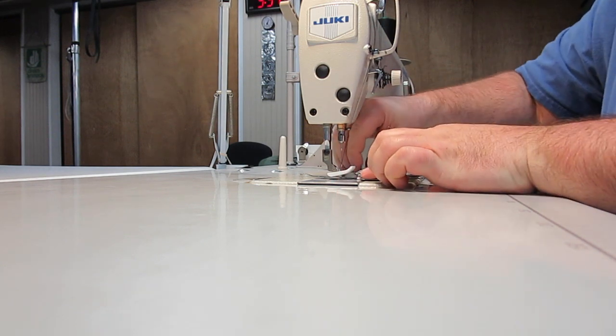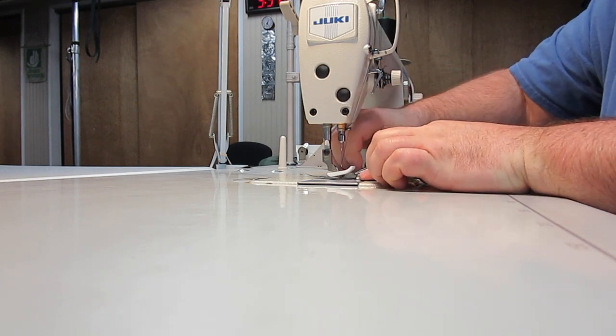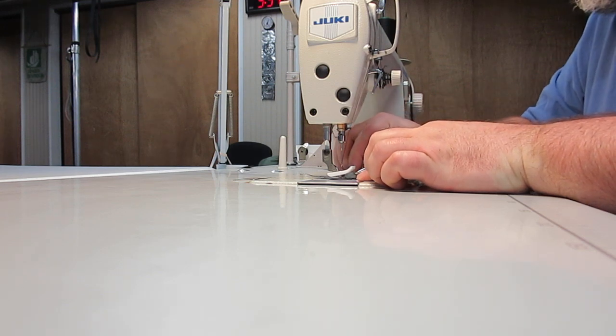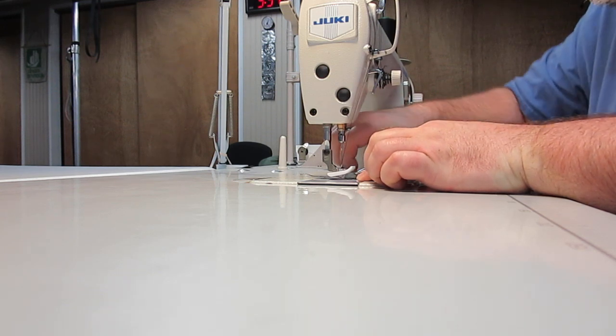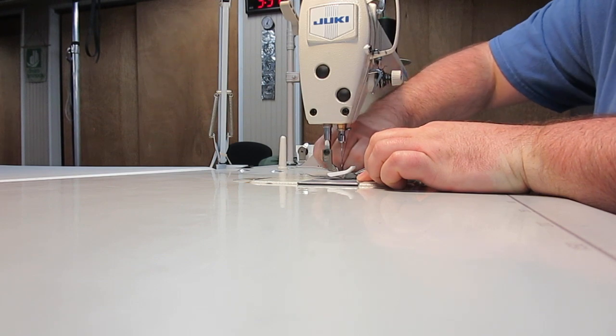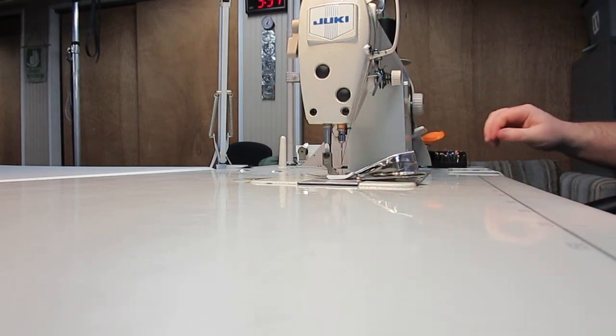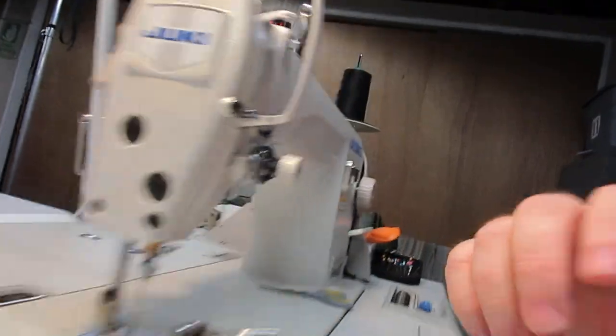The binding attachment itself attaches to the sewing machine with these two screws here. Let me get that set and tighten down and come on over and take a closer peek at my setup here.